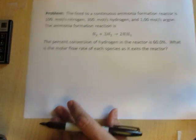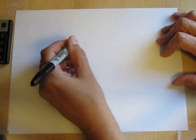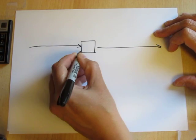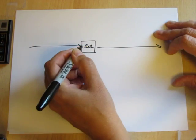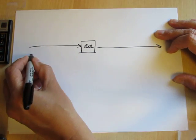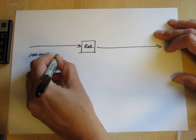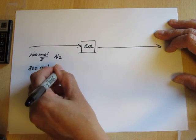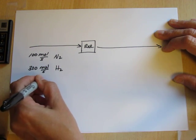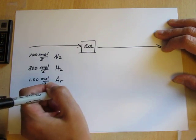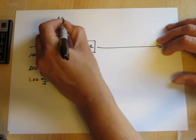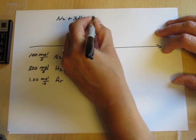We're going to solve this problem using extent of reaction. To do so, I'm going to sketch the reactor with a feed stream and an exit stream and write the numbers from the problem. The feed is 100 moles per second nitrogen, 300 moles per second hydrogen, and 1 mole per second argon. The reaction, as we saw from the previous sheet, is nitrogen plus 3 hydrogen becomes 2 ammonia.